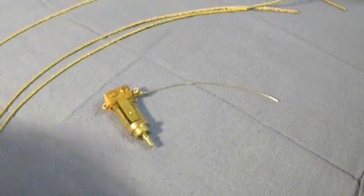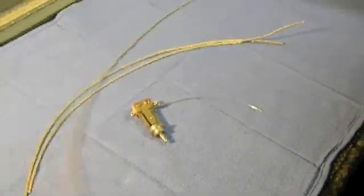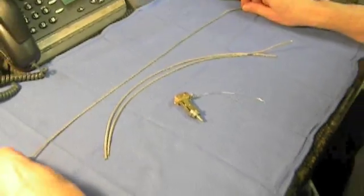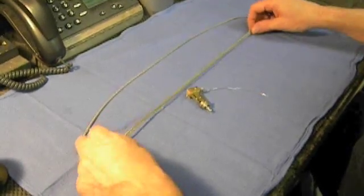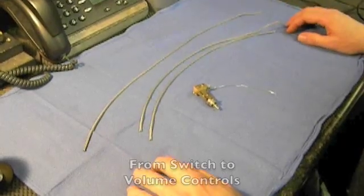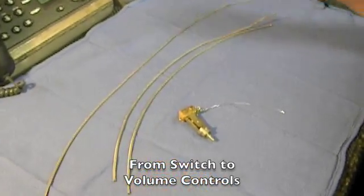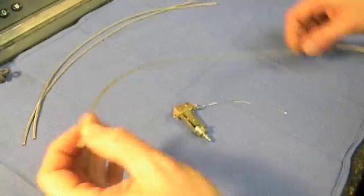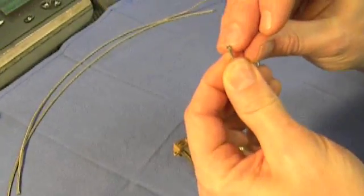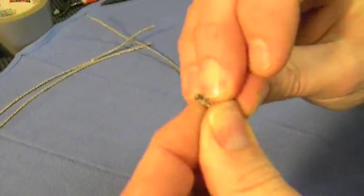Now, we have three wires here. One of them is really long, and that goes from the output of the switch to the jack. We have two more that are about the same length, and those are going to go from the switch to the volume controls. So what I like to do is I'm going to do the output of the switch first. So we're going to take the long one, and we're going to peel back our braided wire.